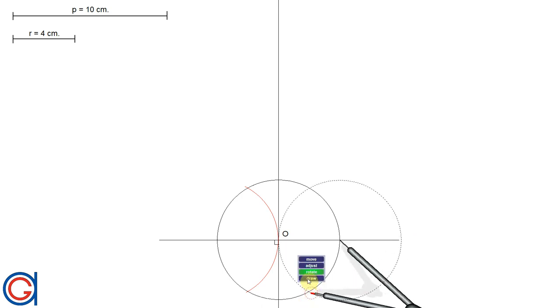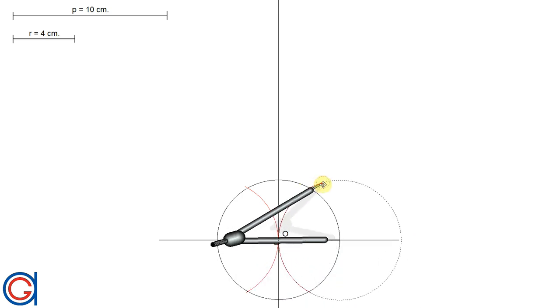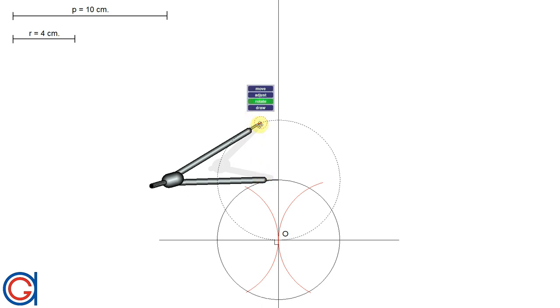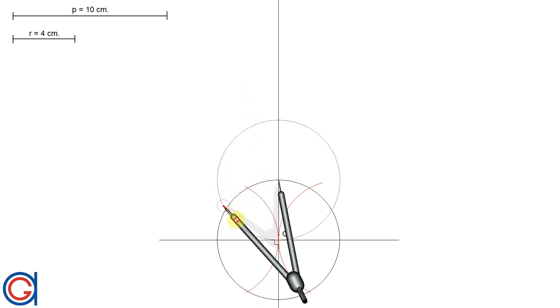Setting it on the top extremity of the vertical axis we scribe another arc, and finally the bottom extremity of the vertical axis. Now as you can see we have split our circle into 12 equal parts.